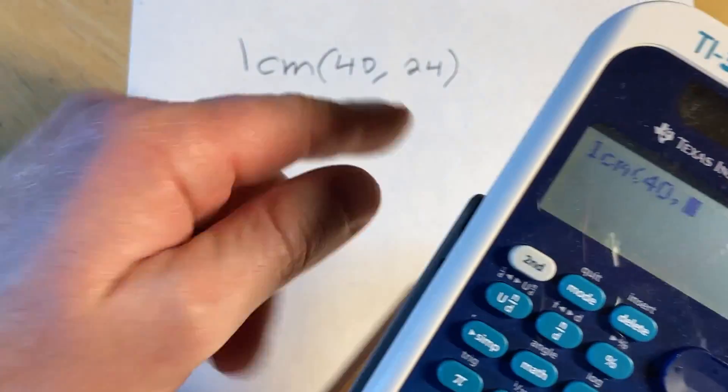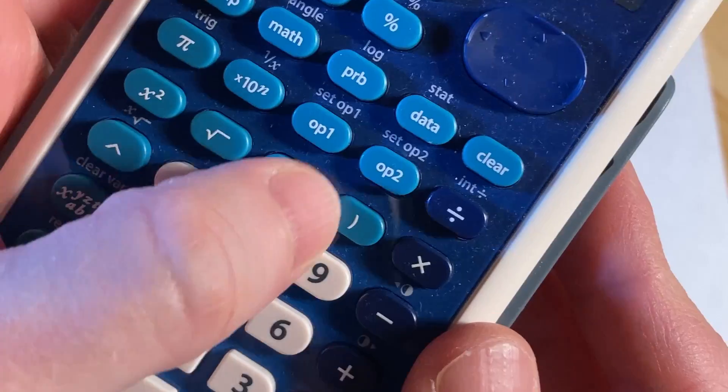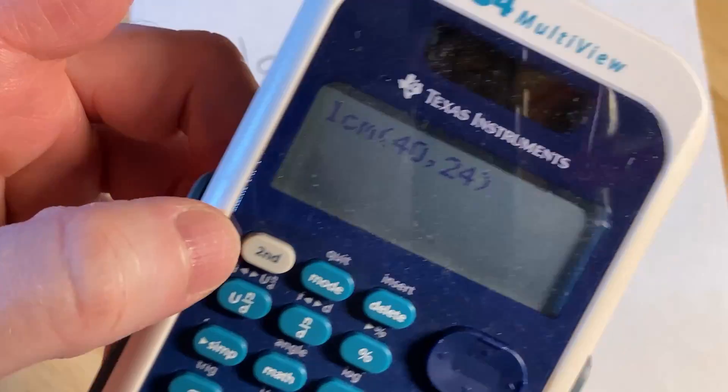The next number is 24, and then we have to close the parentheses. Now we just have to press enter and we should have the answer with this calculator.